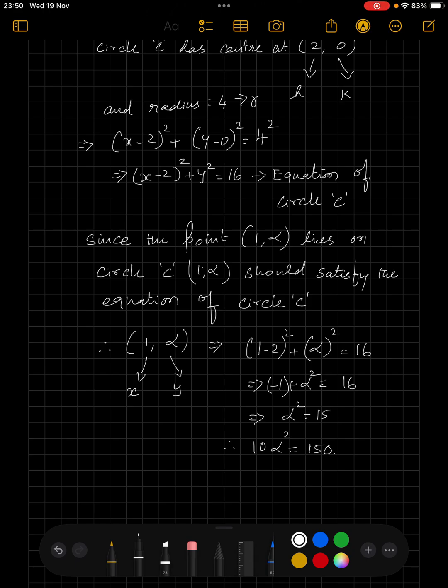1 comma alpha is the x and y coordinate of a point on circle C. So let us substitute 1 and alpha for x and y in the equation x minus 2 whole square plus y square is equal to 16, and this gives us alpha square as 15. Therefore, the value of 10 alpha square is equal to 150.